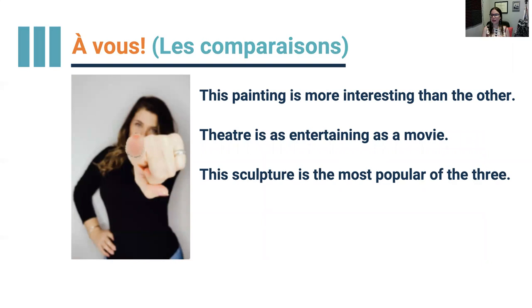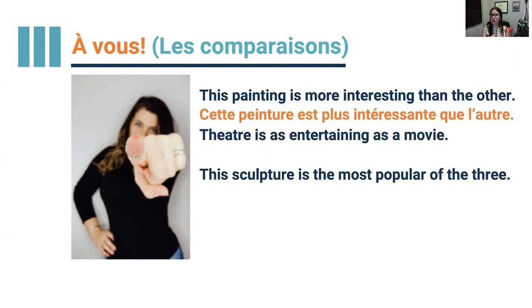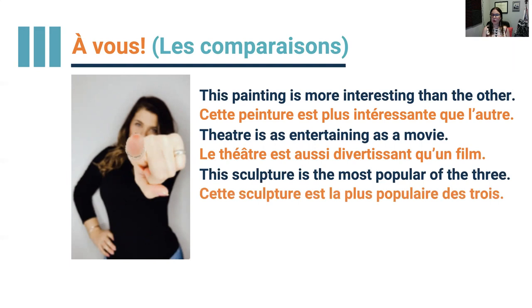À vous, traduisez ces phrases en français: This painting is more interesting than the other. Theater is as entertaining as a movie. And this sculpture is the most popular of the three. You can pause here to check vocabulary and comparisons. Cette peinture est plus intéressante que l'autre. Le théâtre est aussi divertissant qu'un film. Cette sculpture est la plus populaire des trois. Note the agreement: 'peinture' is feminine, so 'intéressante'.